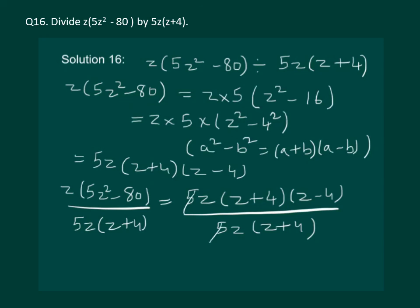5 gets cancelled, z gets cancelled, and z plus 4 gets cancelled. And we get the required answer as z minus 4.